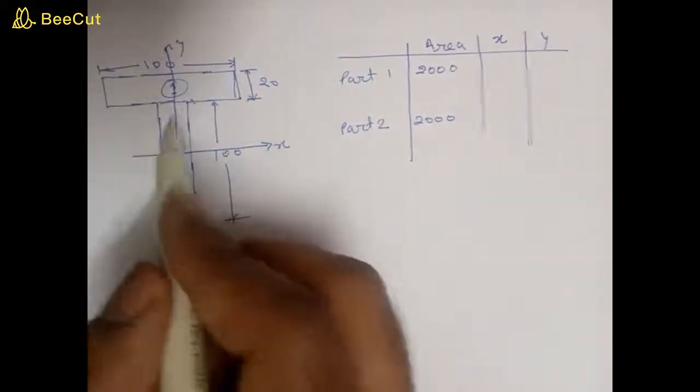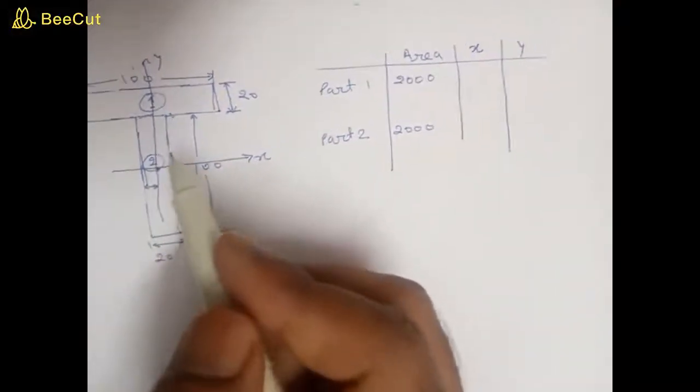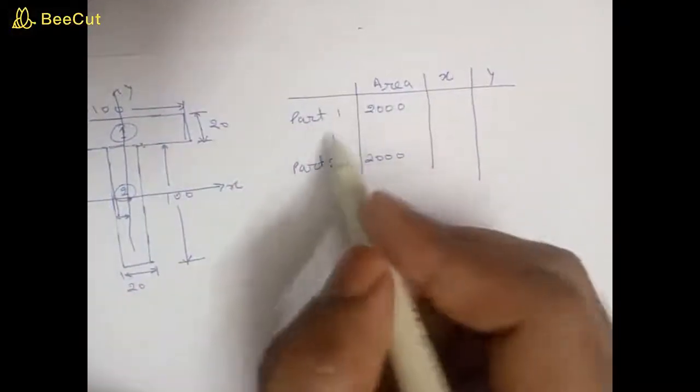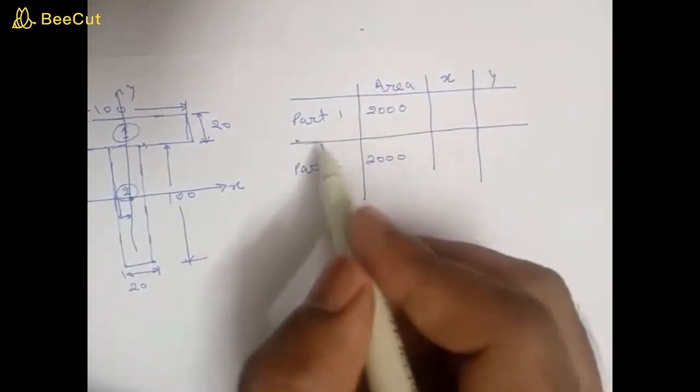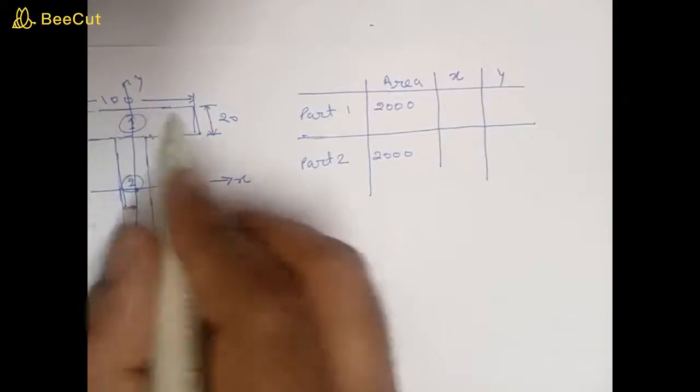This is one and this is two. So I have made a table, and for part one and for part two I have calculated different parameters. For part one, area of part one is 100 into 20.